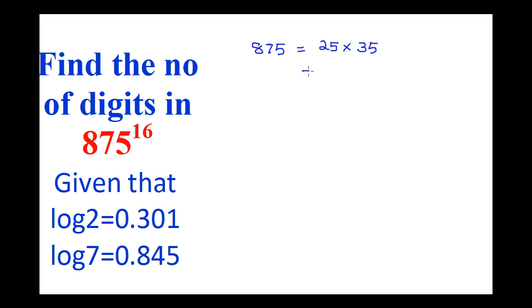Now this can be written as 25 is 5 squared and 35 is 5 into 7, which equals 5 cubed into 7. Now 875 raised to 16 becomes 5 cube into 7 raised to 16. This becomes 5 cubed into 16 into 7 raised to 16.